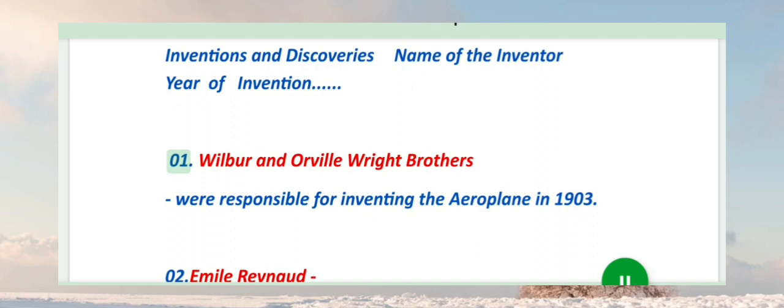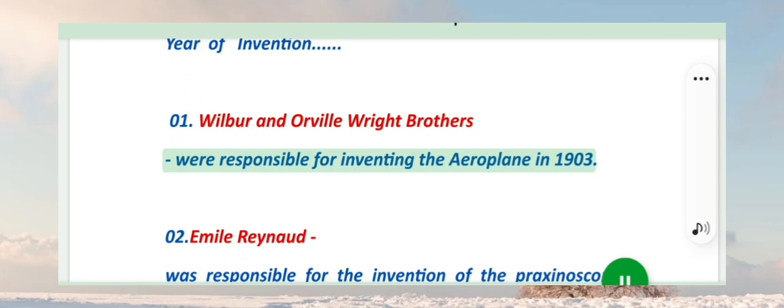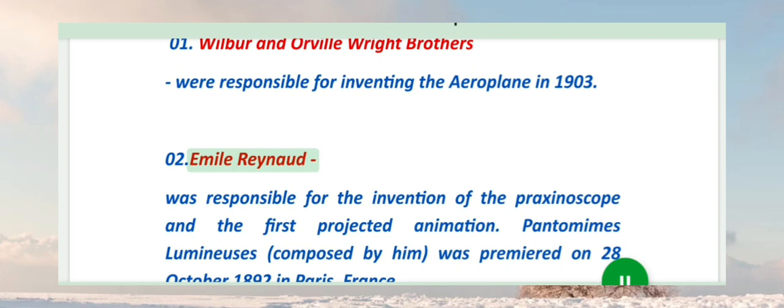Inventions and discoveries, name of the inventor, year of invention. Wilbur and Orville Wright brothers were responsible for inventing the aeroplane in 1903.